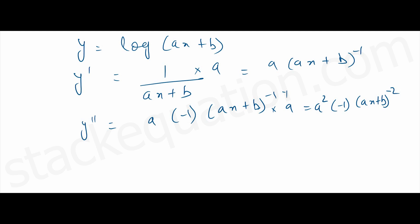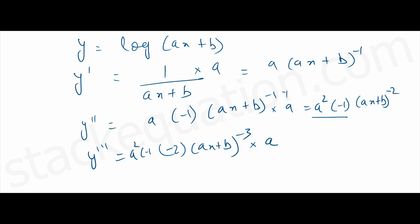So we'll do it for the third time so that we can see the pattern. This time we'll again differentiate (ax + b). That gives minus two times (ax + b) to the power minus three, into the differentiation of (ax + b) that is a. And we'll bring in a squared times minus one from the last expression. So if I write all of this properly: a cubed times minus one times minus two times (ax + b) to the power minus three.